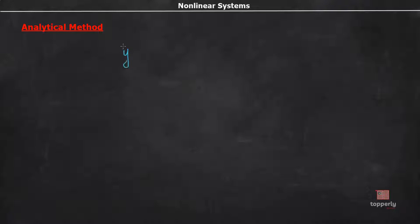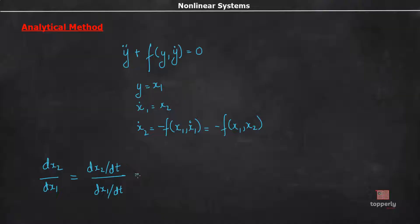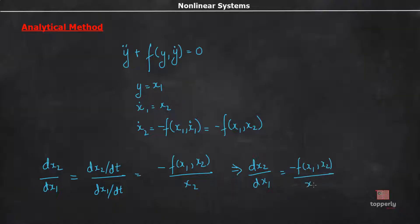Suppose you are given a nonlinear differential equation of the form y-double-dot plus f(y, y-dot) equal to zero. This equation can be easily put into phase variable form as y equal to x1, x1-dot equal to x2, and x2-dot equal to minus f(x1, x2). Now, we will combine these two equations in the form of dx2 by dx1. So dx2 by dx1 can be manipulated as (dx2/dt) divided by (dx1/dt), which gives dx2/dx1 equal to minus f(x1, x2) divided by x2.